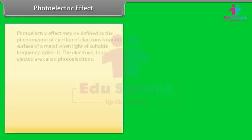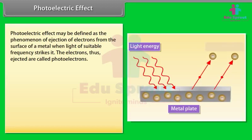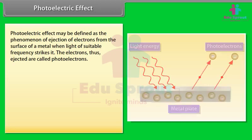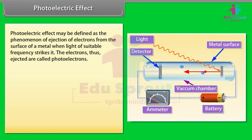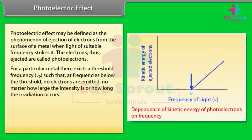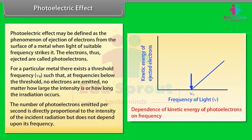Photoelectric effect is the phenomenon of ejection of electrons from the surface of a metal when light of suitable frequency strikes it; the ejected electrons are called photoelectrons. For a particular metal, there exists a threshold frequency ν₀ such that at frequencies below the threshold, no electrons are emitted, no matter how large the intensity or how long the radiation occurs. The number of photoelectrons emitted per second is directly proportional to the intensity of the incident radiation but does not depend on its frequency.